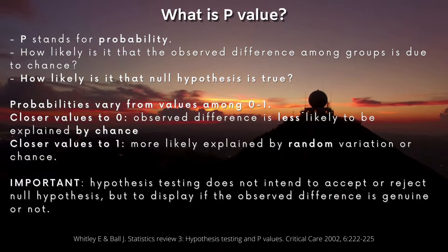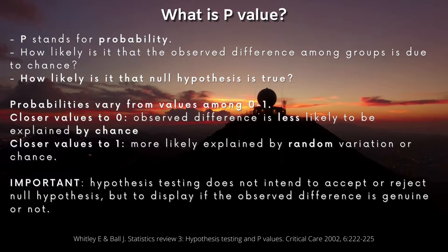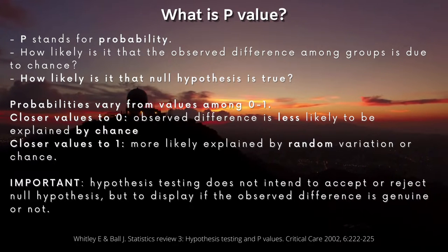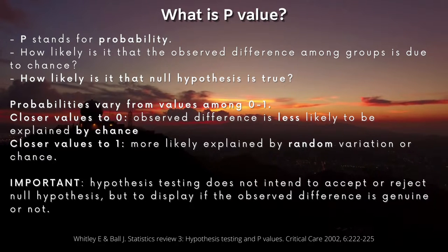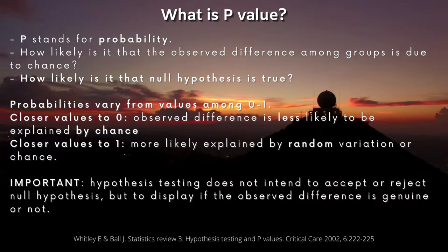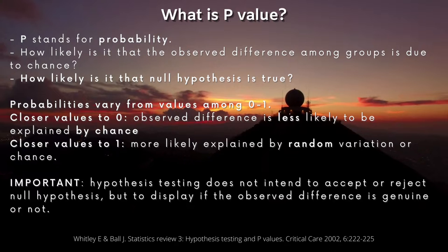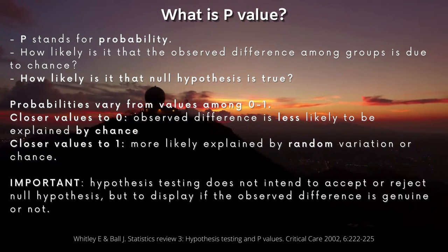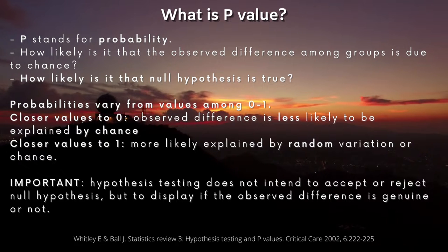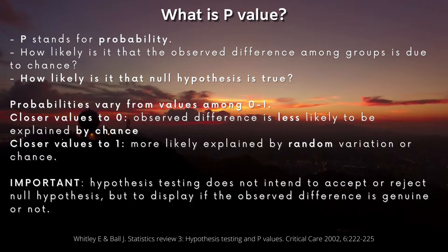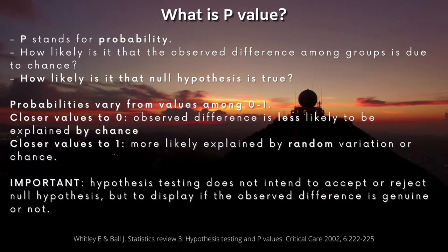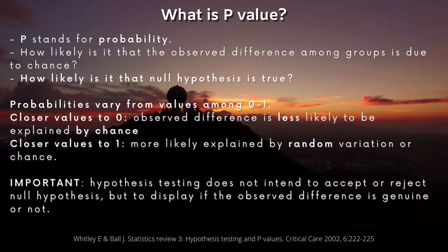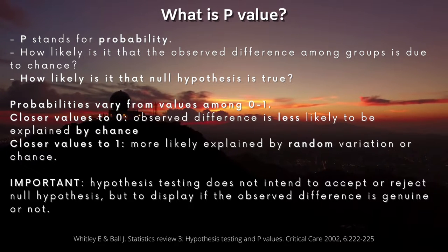So what does p-value mean? First of all, p-value stands for probability. Two key questions help assess the definition: how likely is it that the observed difference among groups is due to chance, and how likely is it that the null hypothesis is true? Probabilities in a statistical perspective are conformed by values that go from 0 to 1. When values are closer to 0, the probability says that observed differences are less likely to be explained just by chance. When p-values are closer to 1, the difference is most likely explained by random variation or simply by chance.